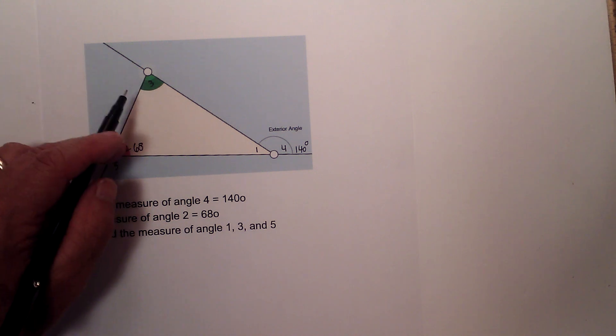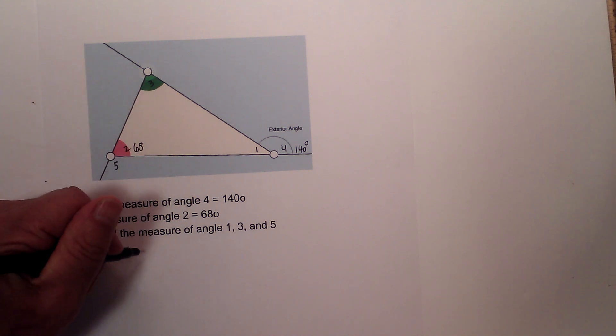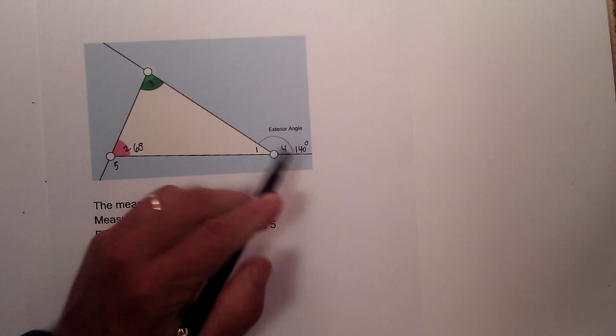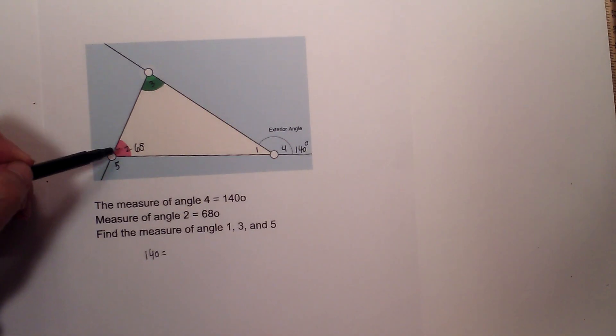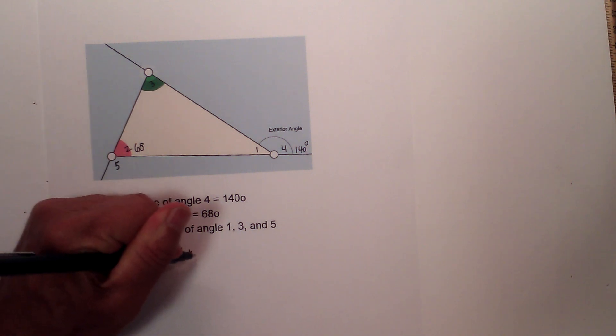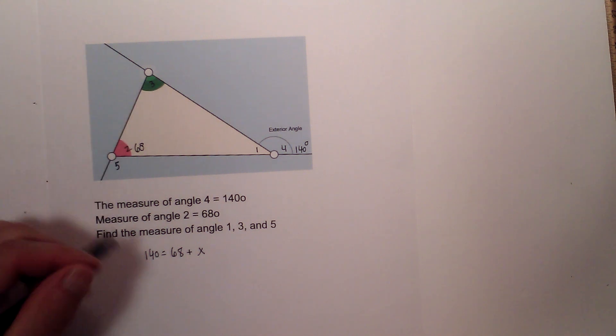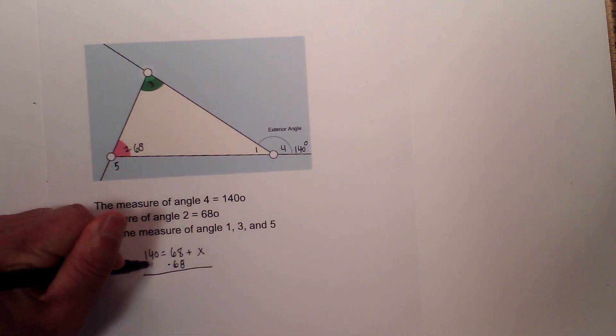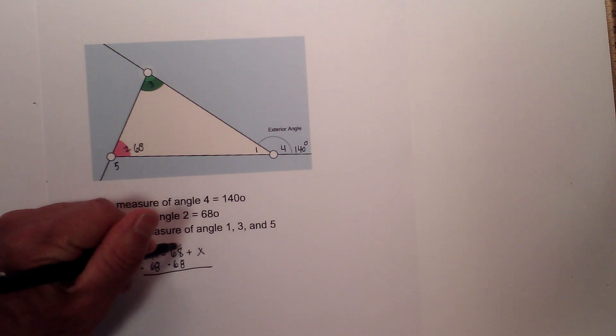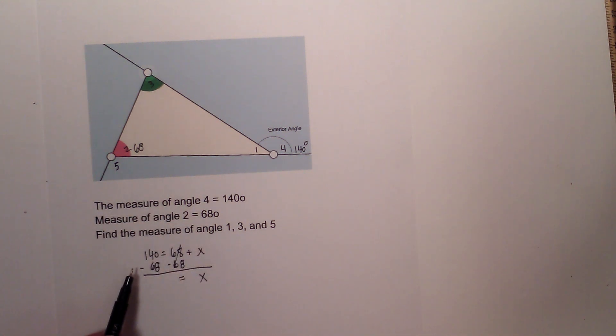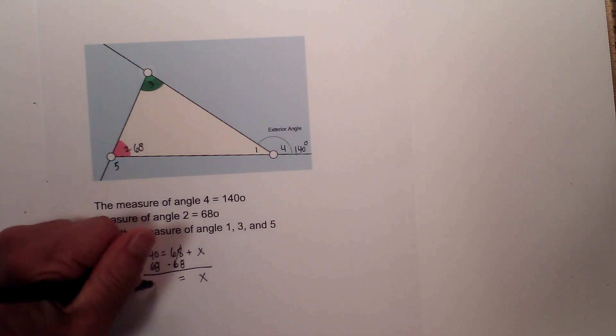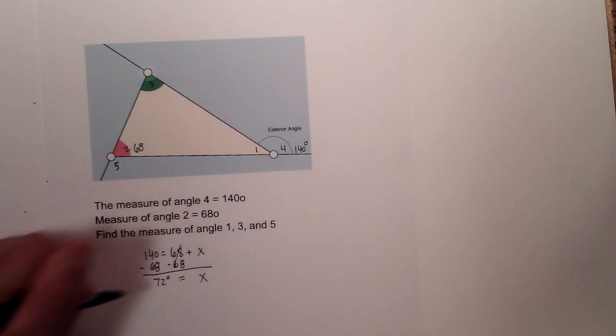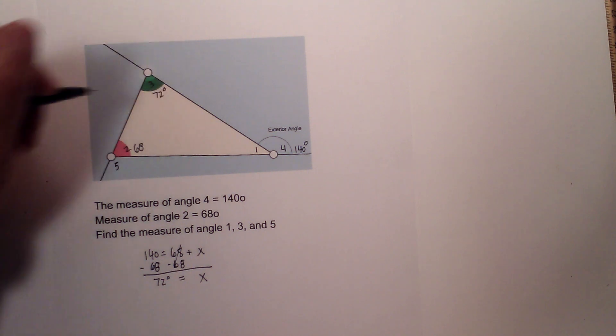Let's find the measure of angle 3 first. So 3 is going to be equal to 140, which is the exterior. And remember, it's equal to the two remote interior angles added together. So that would be 68 plus x because we're trying to find 3. Let's subtract 68 from both sides. These cancel, bring down the x, and x is equal to 140 minus 68, which is 72 degrees. So angle 3 is 72 degrees.